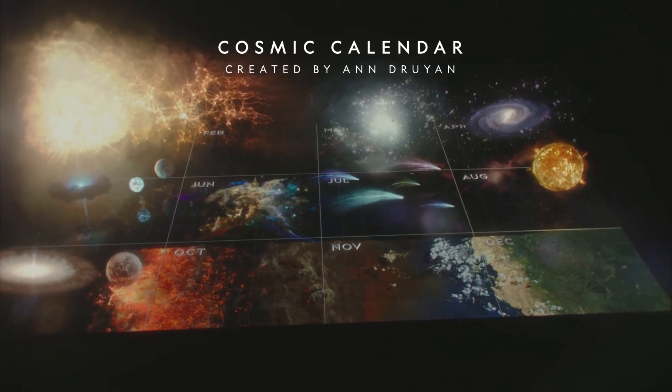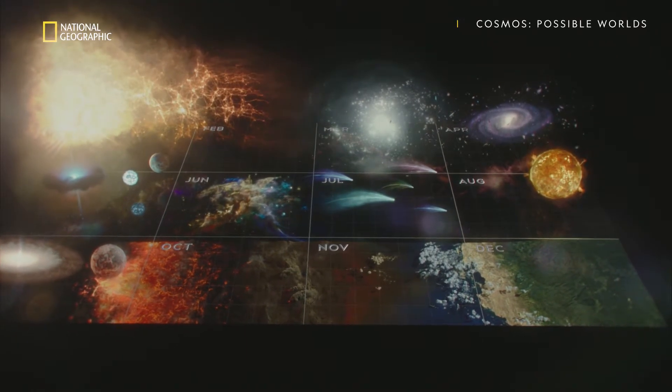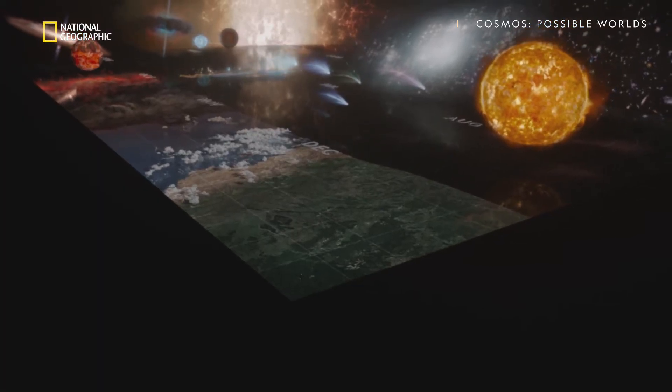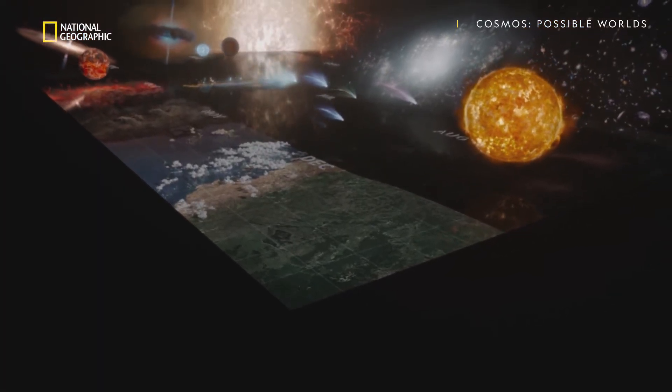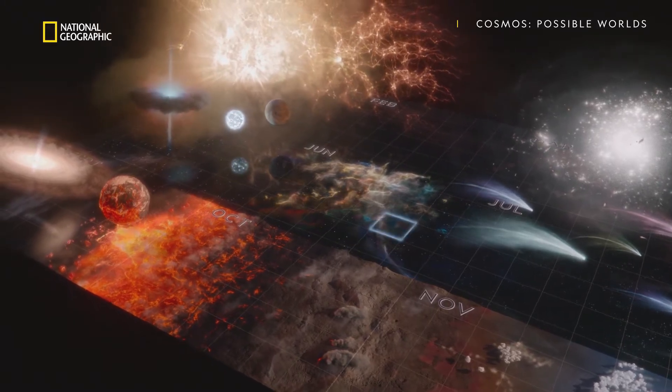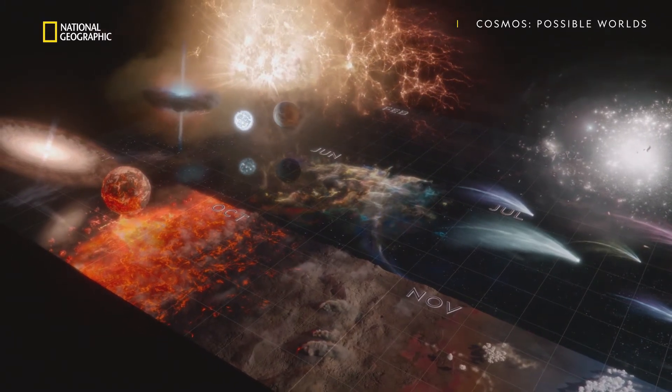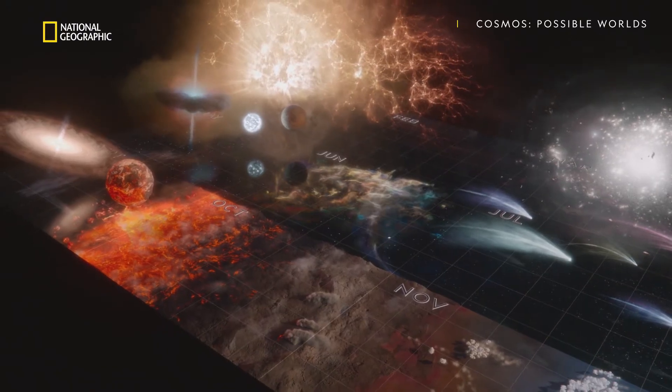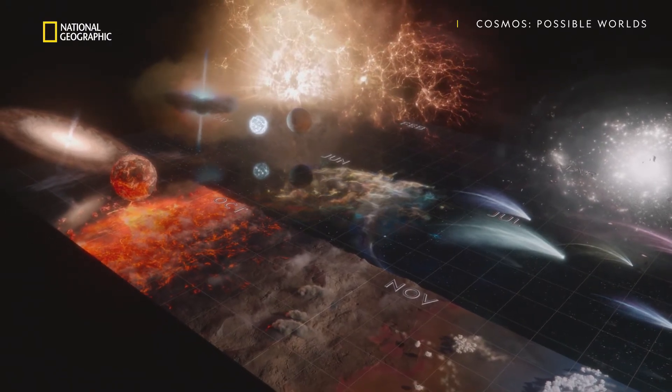This cosmic calendar compresses all of the last 13.8 billion years since the Big Bang into a single calendar Earth year. Every month is a little more than a billion years. Every day a little less than 40 million. A single hour is almost 2 million years.